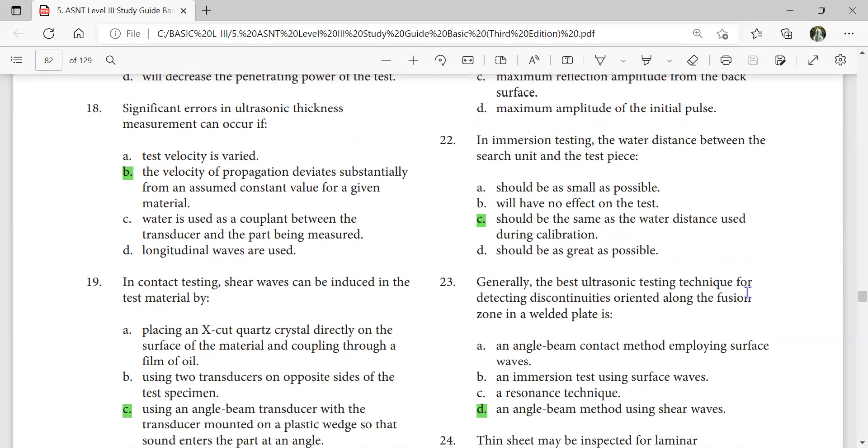Generally, the best ultrasonic testing technique for detecting discontinuities oriented around the fusion zone in a weld plate is an angle beam method using shear waves.